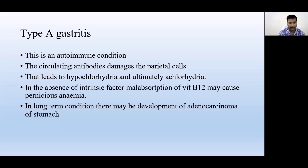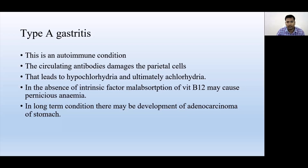So Type A gastritis develops due to autoimmune conditions — our own body develops antibodies against the parietal cells of the stomach, damaging them, causing all the symptoms of gastritis, and in the long term, the development of chronic pernicious anemia.